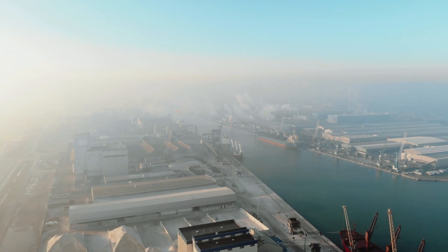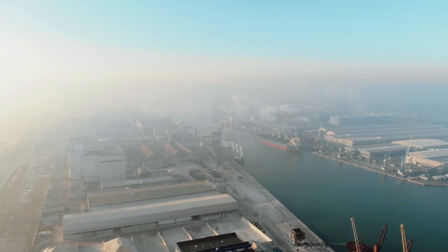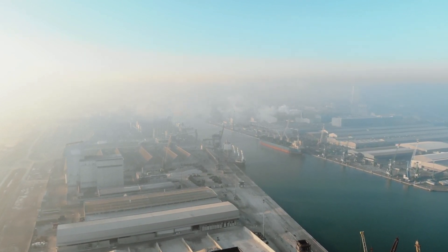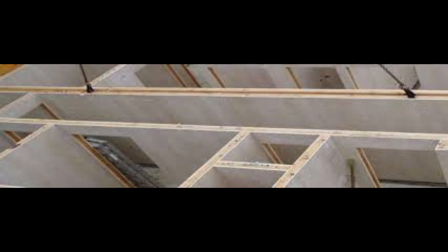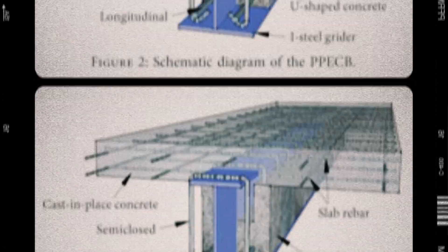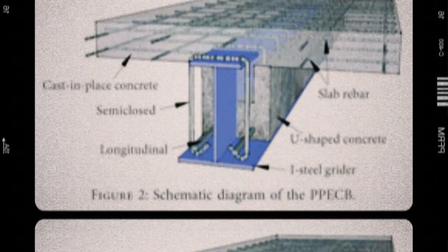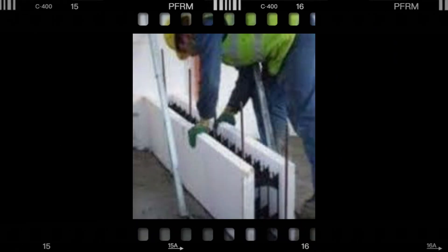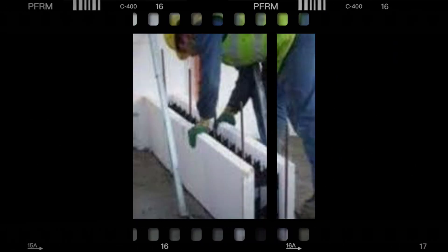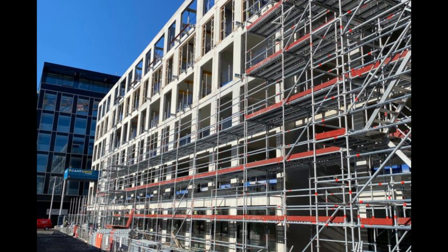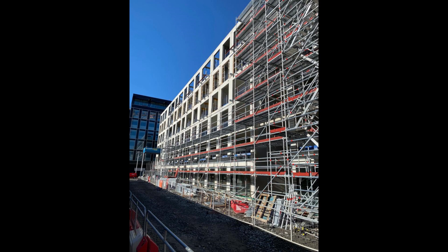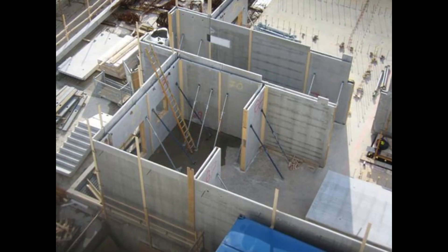The twin wall system utilizes cast and lattice girders to separate two concrete slabs. The construction process involves placing wall units on the site, temporarily supporting the twin units, joining the wall units using reinforcement and filling the gap between them with concrete. This method is quicker and more cost effective than traditional construction approaches. The twin wall system is frequently used in conjunction with precast floors.